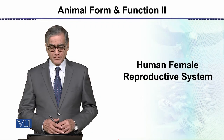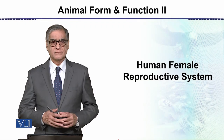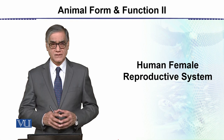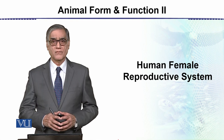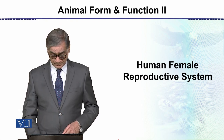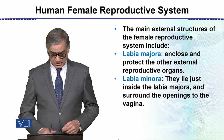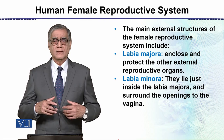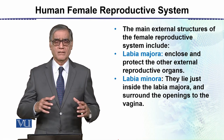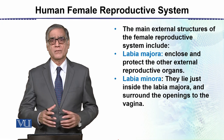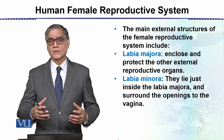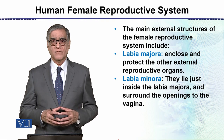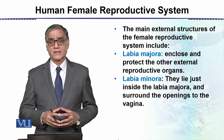The next topic is the Human Reproductive System — specifically, the Human Female Reproductive System. Having completed the Male Reproductive System, we are now going to start the Female Reproductive System.